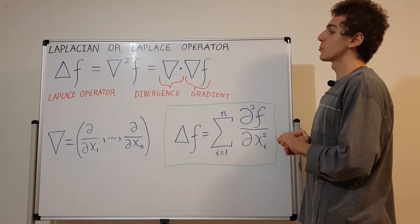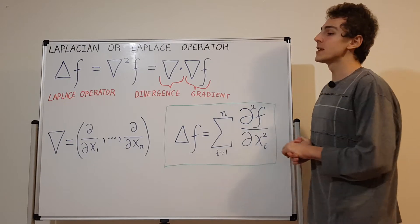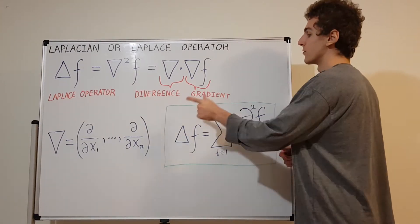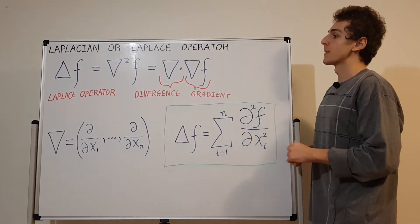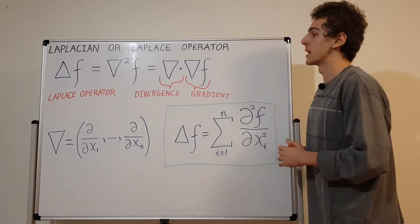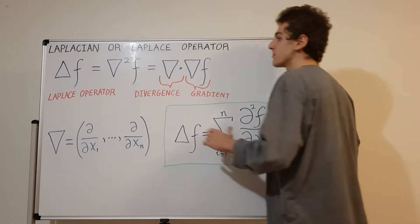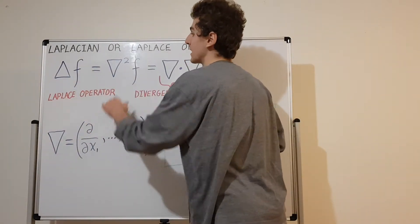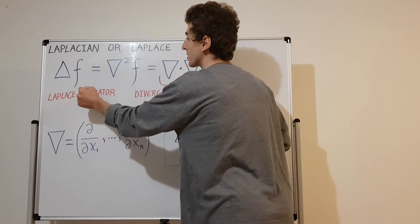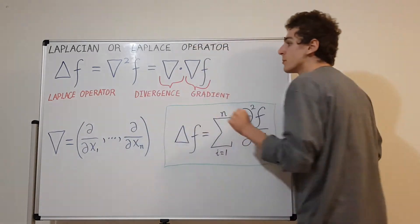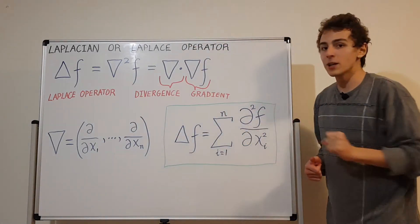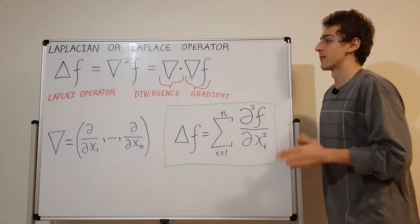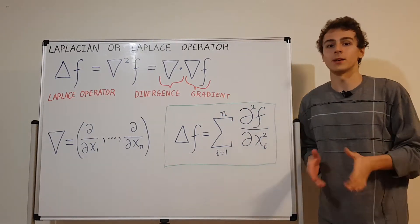The Laplace operator is defined as the divergence of the gradient. A side note on notation: sometimes the Laplace operator is written with a triangle symbol — the Greek letter delta. But this can be confusing because it is ambiguous. Sometimes delta F means change in F.